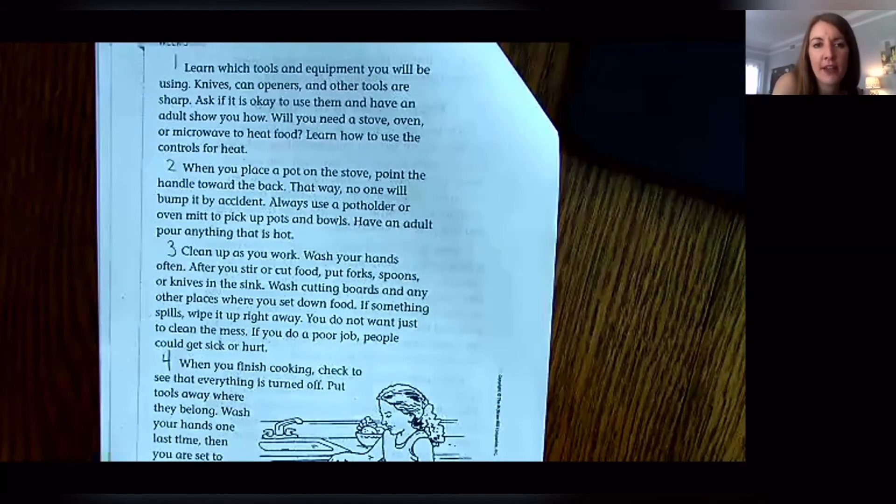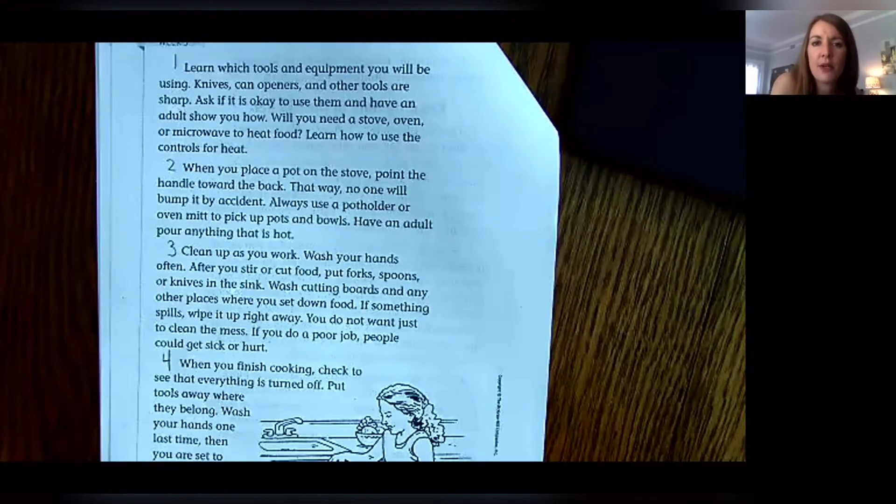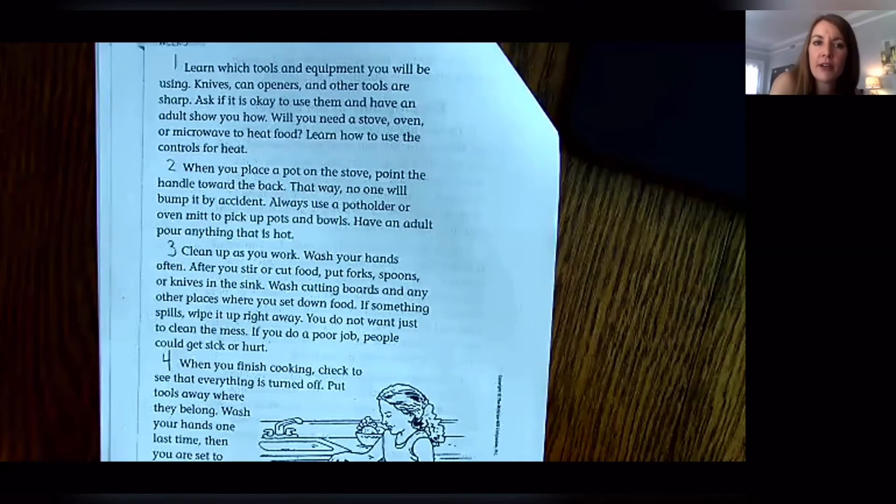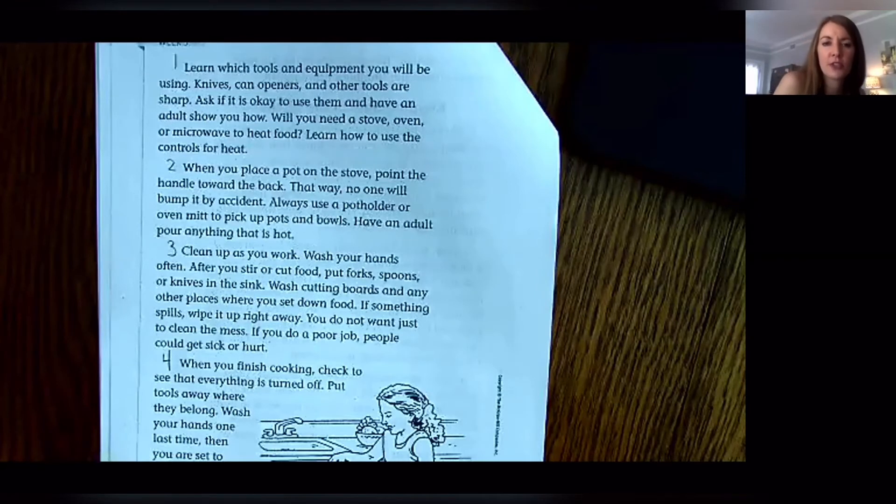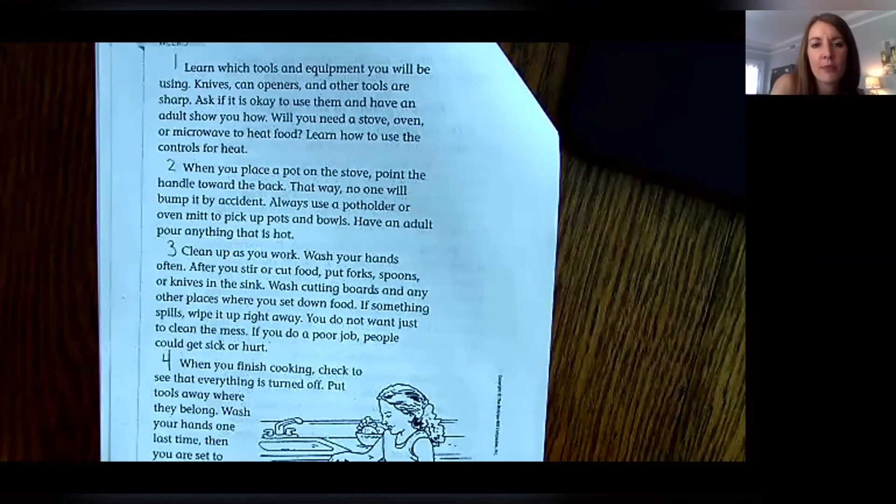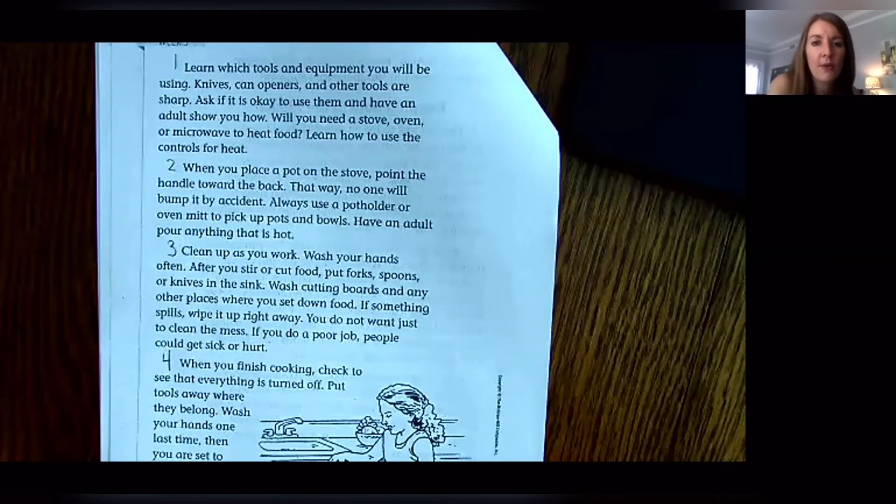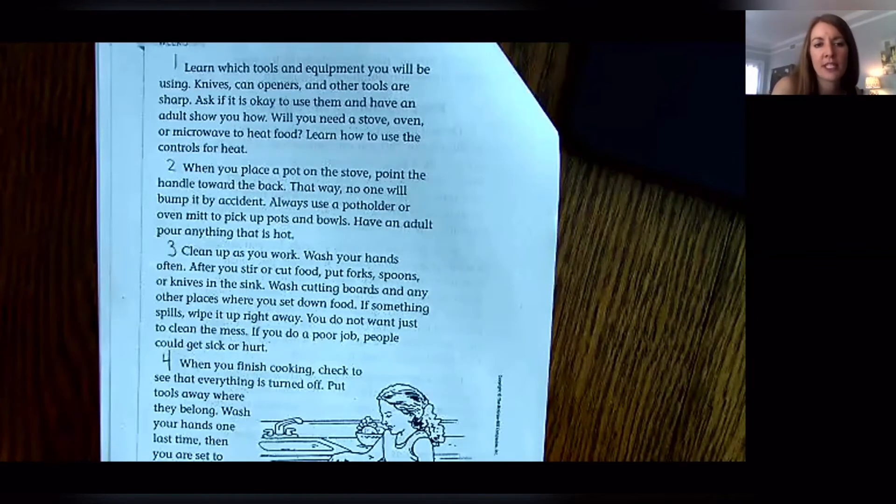Learn which tools and equipment you will be using. Knives, can openers, and other tools are sharp. Ask if it is okay to use them and have an adult show you how. Will you need a stove, oven, or microwave to heat food? Learn how to use the controls for heat. When you place a pot on the stove, point the handle toward the back. That way no one will bump it by accident. Always use a pot holder or oven mitt to pick up pots and bowls. Have an adult pour anything that is hot.